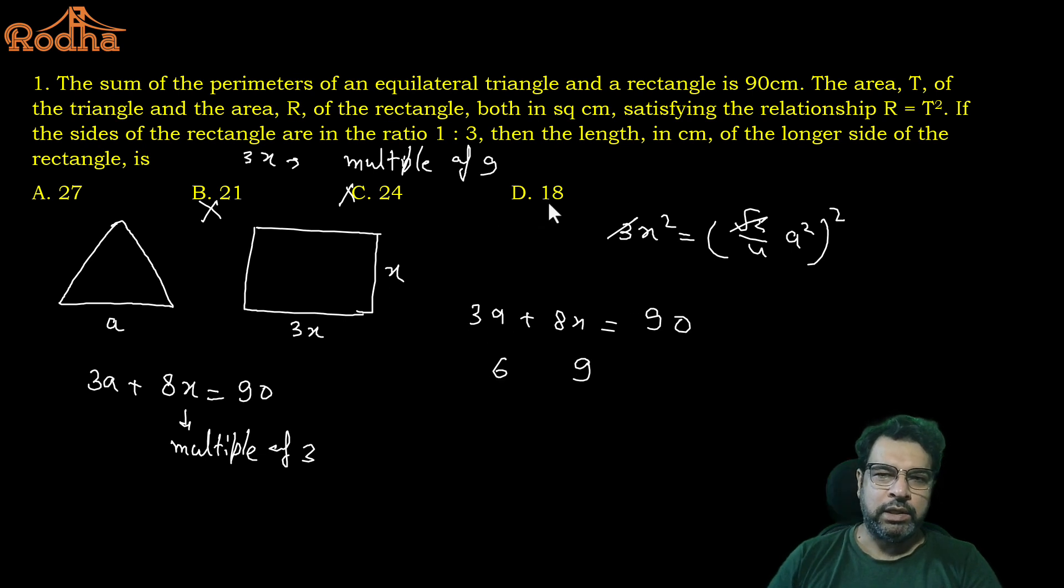You can check it now. R is equal to T squared, rectangle perimeter 3X squared should be equal to T squared, that is, root 3 by 4 of A squared whole squared. 3 will be eventually cancelled out. Now, look at these values, we have 3A plus 8X is equal to 90, if you go with the option, if option A gives you 3X is equal to 27, X is equal to 9.